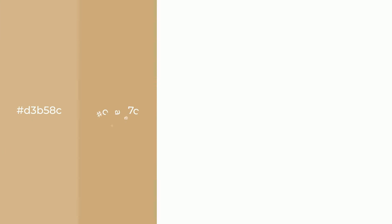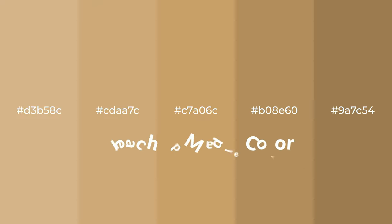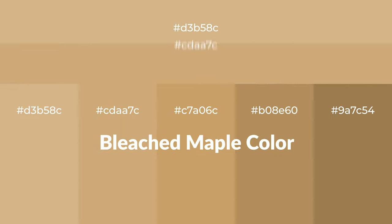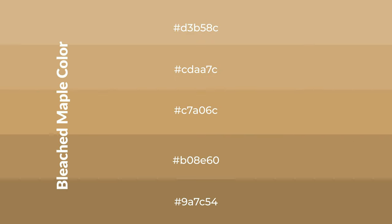Warm shades of bleached maple color with brown hue for your next project. To generate tints of a color, we add white to the color. Tints create light and exquisite emotions. To generate shades of a color, we add black to the color.